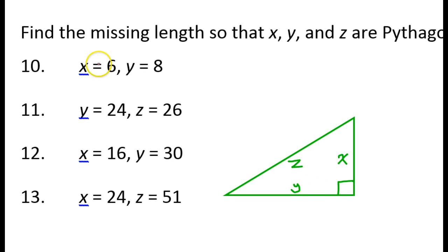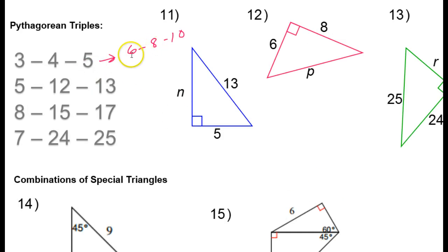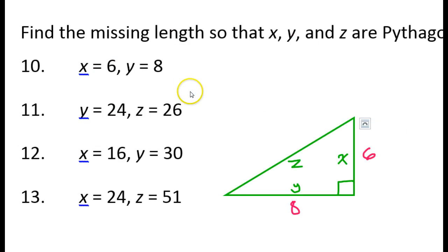We know that we have a right triangle and we're given two sides. Without using the Pythagorean theorem, we should be able to know the missing side. If x is 6 and y is 8 — what's the third side? The 6 and the 8, that's double 3, double 4. That means the third side must be double 5 for the 3-4-5 pattern. So this third side must be 10. So Z must equal 10.